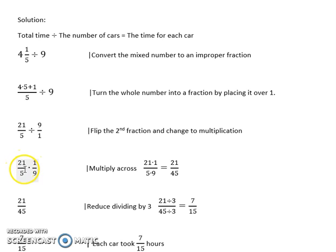Now it's one fraction multiplied by another. When we multiply fractions, we just multiply across. Multiply the numerators and multiply the denominators. 21 times 1 is 21 and 5 times 9 is 45. So we get 21 over 45.